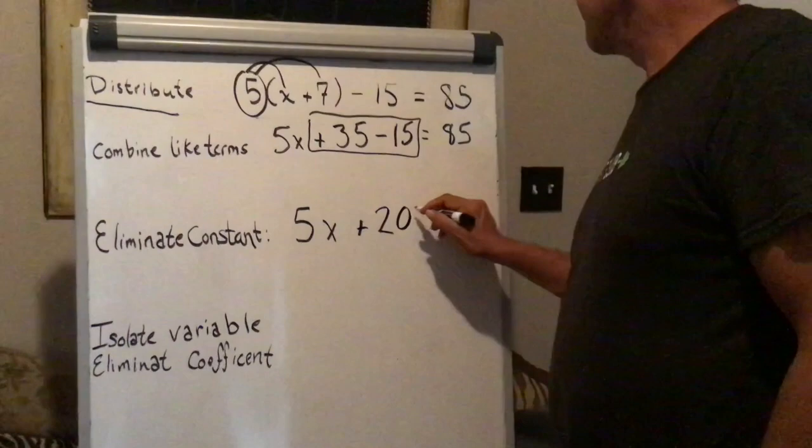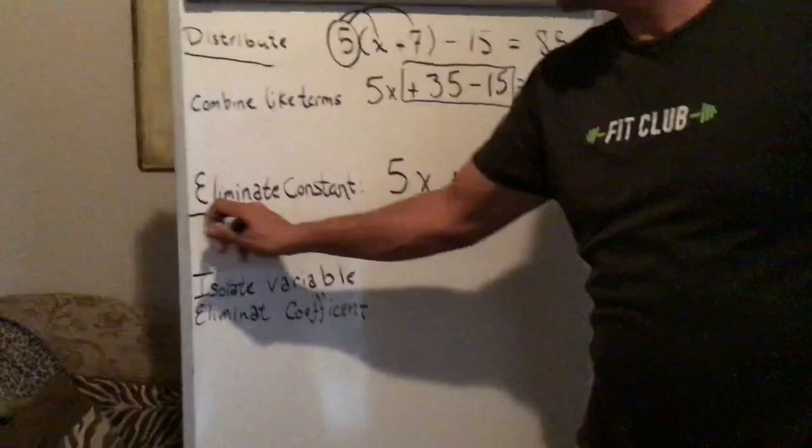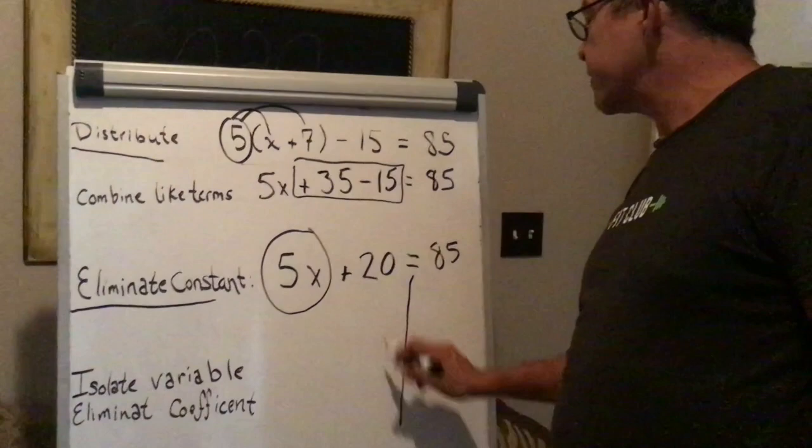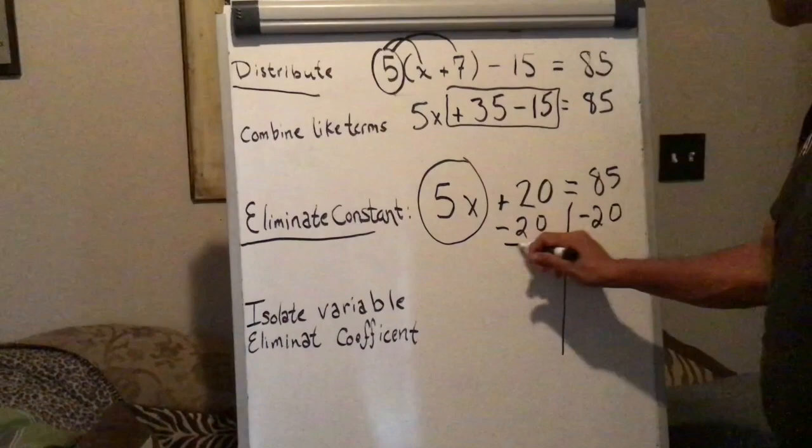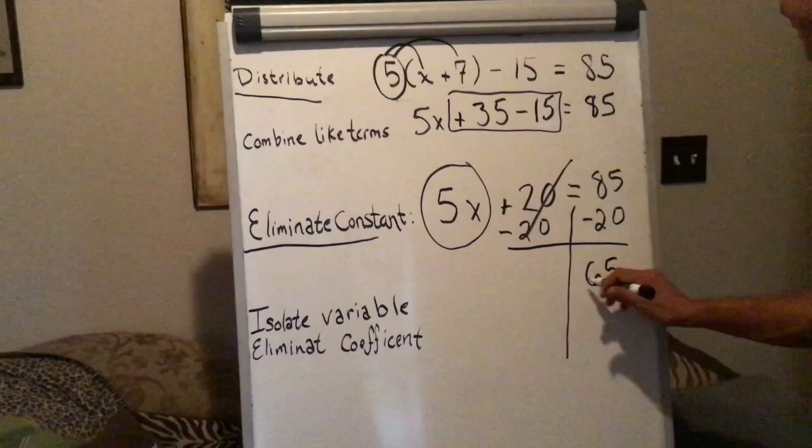Next, I need to eliminate the constant. Now the constant is the number without a variable. So I subtract 20 from both sides. 85 minus 20 is 65. Don't forget to bring the 5 times x down.